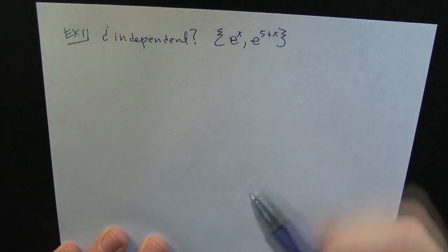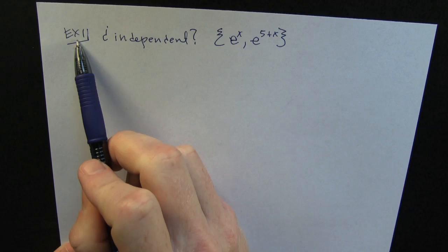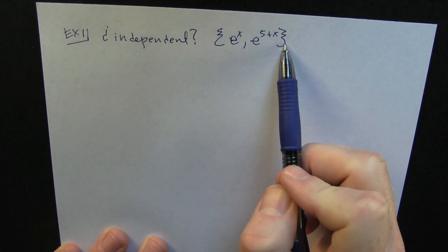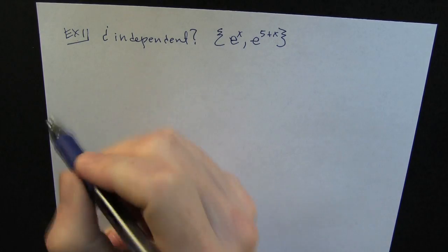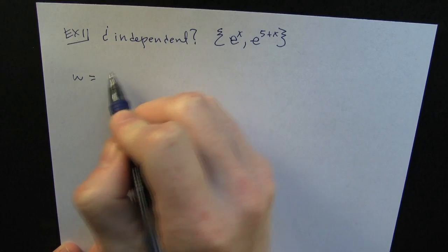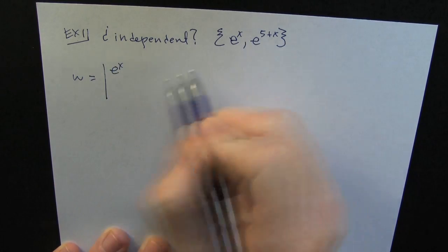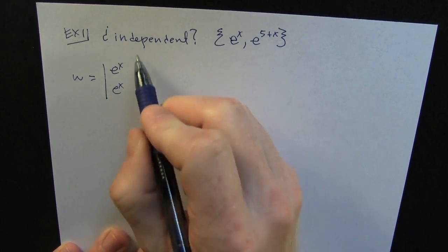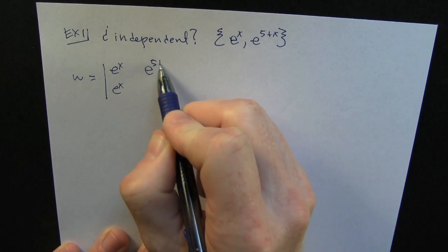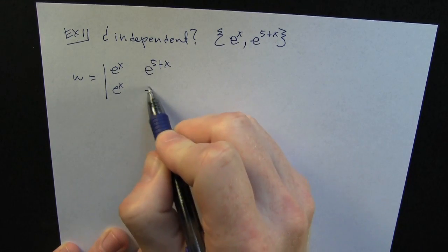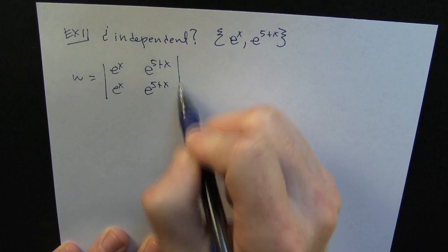I wish I could see an example of something like this. Yeah. Alright. Well, maybe I'll key up a couple. Here we go. So we have this set e to the x and e to the 5 plus x. It's my intention to compute the Wronskian. Right. So I'm gonna line my functions across the top, and then I'm gonna take n minus 1 derivatives down the side.